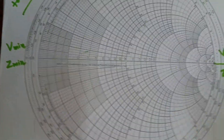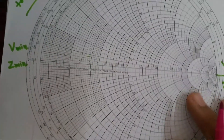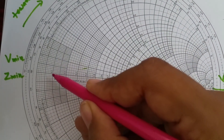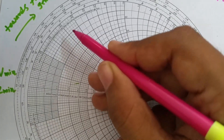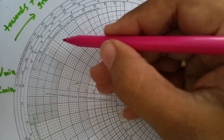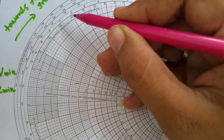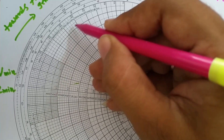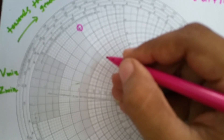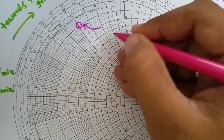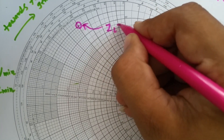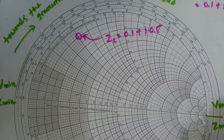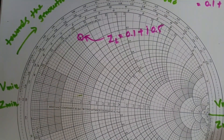To plot that, the real part should be 0.1. These are real circles. Where this real circle has value 0.1, and the positive imaginary circle is 0.5 — these intersect at this position. So the value of ZL at this point is 0.1 + j0.5. That is how we plot point ZL on the Smith chart.